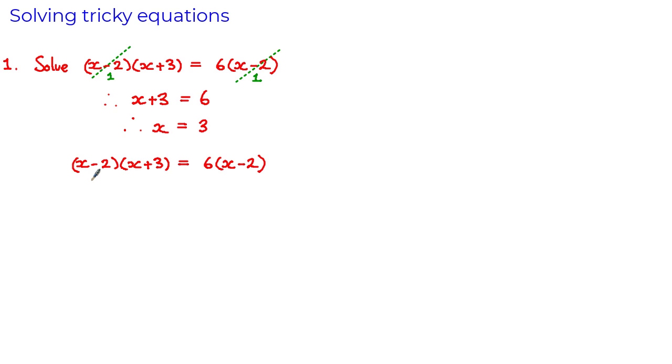Let's try again but this time instead of dividing through by x minus 2 on both sides, let's expand out the brackets first. So expanding this left hand side we get x² + 3x - 2x - 6 = 6x - 12. Collecting the like terms on the left hand side we get that x² + x - 6 = 6x - 12. And now if we subtract the 6x and the minus 12 from both sides we get that x² - 5x + 6 = 0.